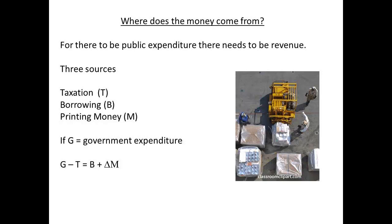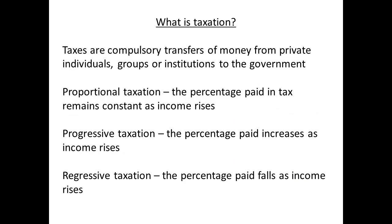The equation for government spending may be written as G minus T equals B plus delta M. Taxes are compulsory transfers of money from private individuals, institutions or groups to the government.